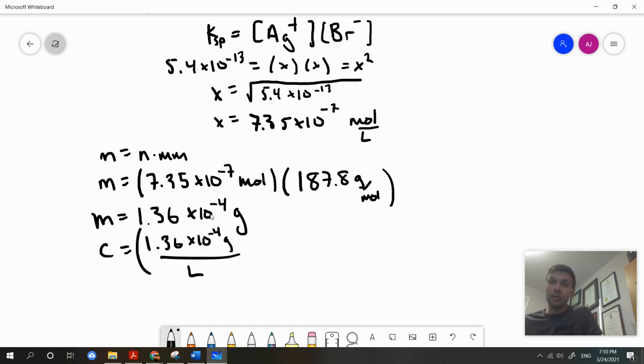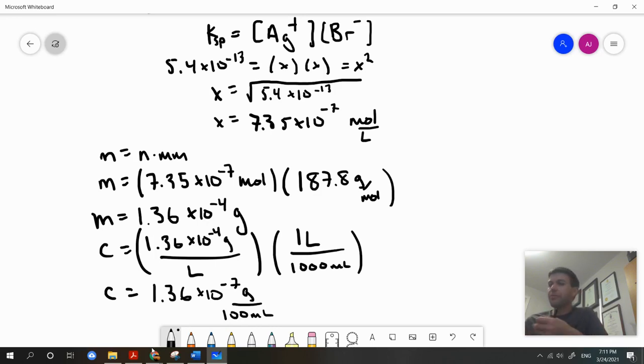One liter is equal to a thousand milliliters, so I'll divide this value by a thousand. So 1.36 times 10 to the negative 7 grams can be dissolved in 100 milliliters. When we convert these molar solubilities to concentrations in grams per 100 milliliters or grams per liter, we see why these ionic compounds are typically referred to as insoluble or slightly soluble compounds.